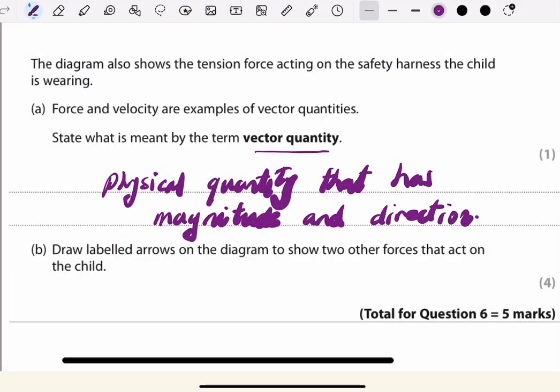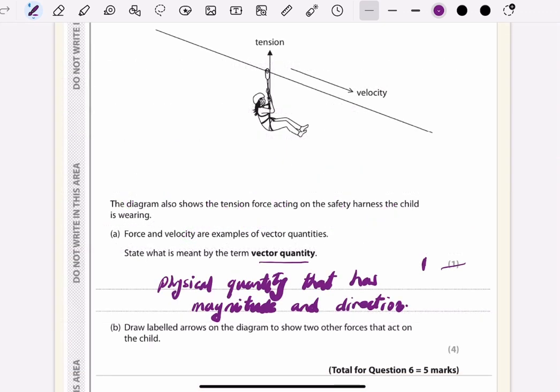Right, now for section B we need to identify and draw two other forces acting on the child. These forces are from the center of mass of the child. We have to draw an arrow, a vertical arrow which is pointing downward.